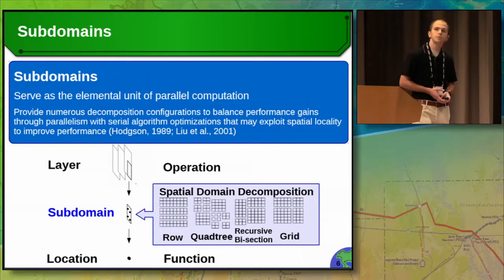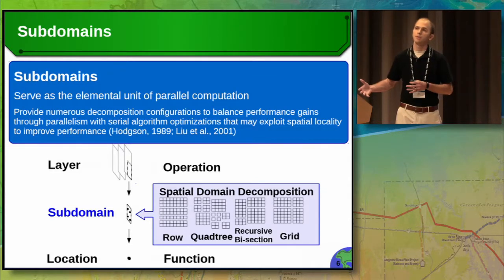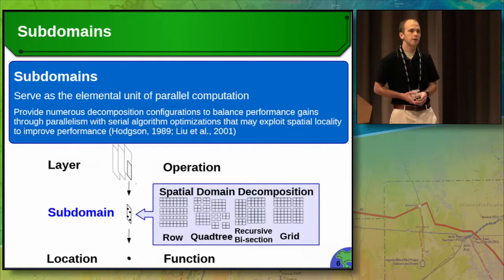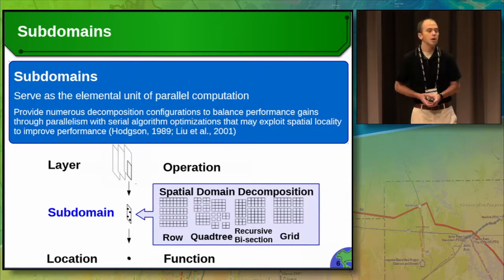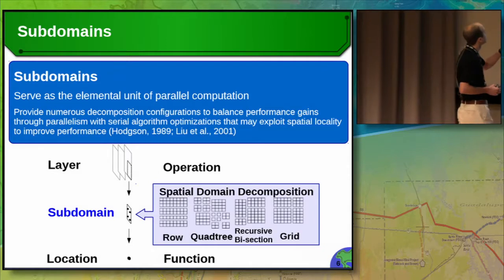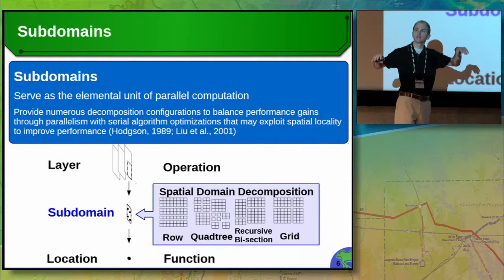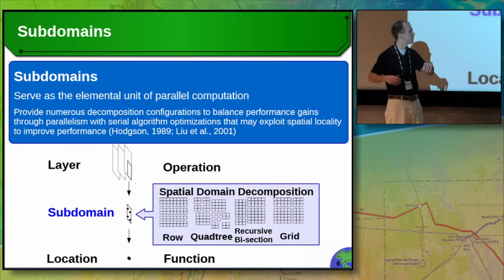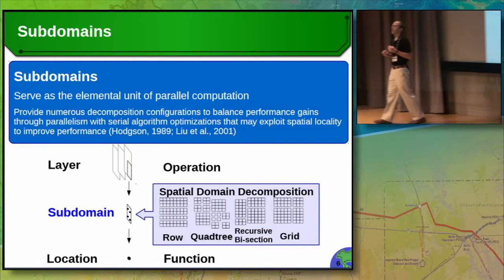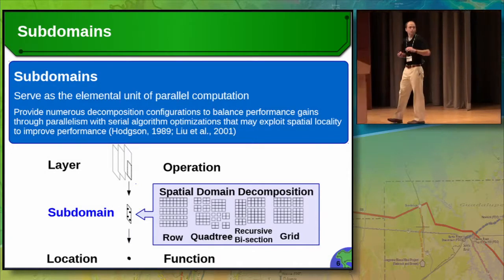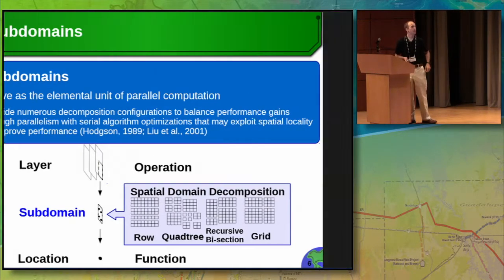So how can we achieve automatic parallelization? First, we introduce a concept of a subdomain. While not necessarily novel, introducing it into the cartographic modeling framework enables PCML to be simpler than previous languages. Subdomains serve as the elemental unit of parallel computation, enabling us to talk about performance gains balanced through parallelism — increasing the spatial domain decomposition, breaking it into smaller bits across more processor cores — balanced with algorithmic optimizations, the code fiddling done on a single processing core. This gives a nice, simple boundary for the language.